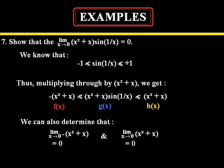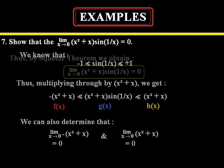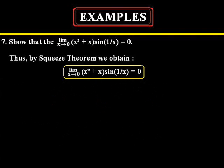Alright so first what we need to do in order to determine the limit as x approaches 0 of x squared plus x times sine of 1 over x, we need to determine the limits of f of x and h of x. The limit as x approaches 0 of negative x squared plus x is equal to 0, and the limit as x approaches 0 of x squared plus x is also equal to 0. So now we know what the limits on the left and right side are. So that's what it's got to be bounded by. So therefore by the squeeze theorem we have proved that the limit as x approaches 0 of x squared plus x times sine of 1 over x is equal to 0.